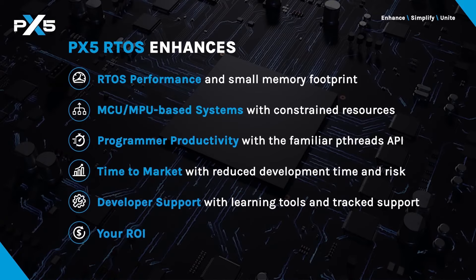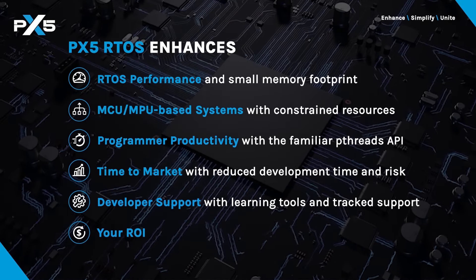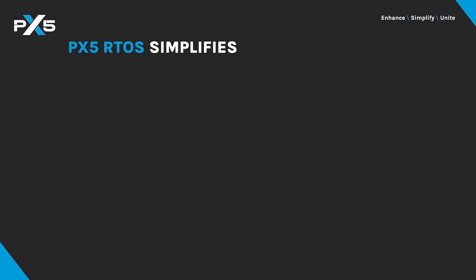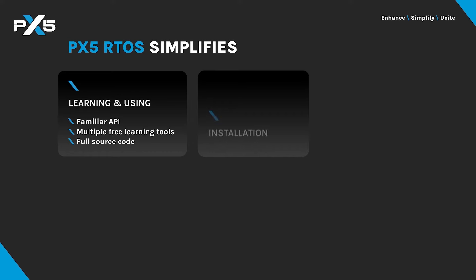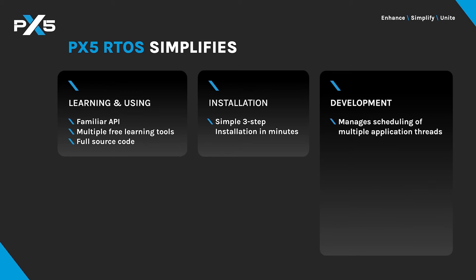The bottom line is that PX5 enhances your ROI. PX5 also simplifies the development and deployment process. In learning and using PX5, by providing the familiar PThreads API, we also offer web-based learning tools like video and white papers. And unlike many black-box RTOS products, PX5 is delivered with well-documented, full source code. Installation is simplified with our three-step installation process that takes just a few minutes. PX5 simplifies development by managing the scheduling of application PThreads, and it's compatible with a wide range of popular development tools.